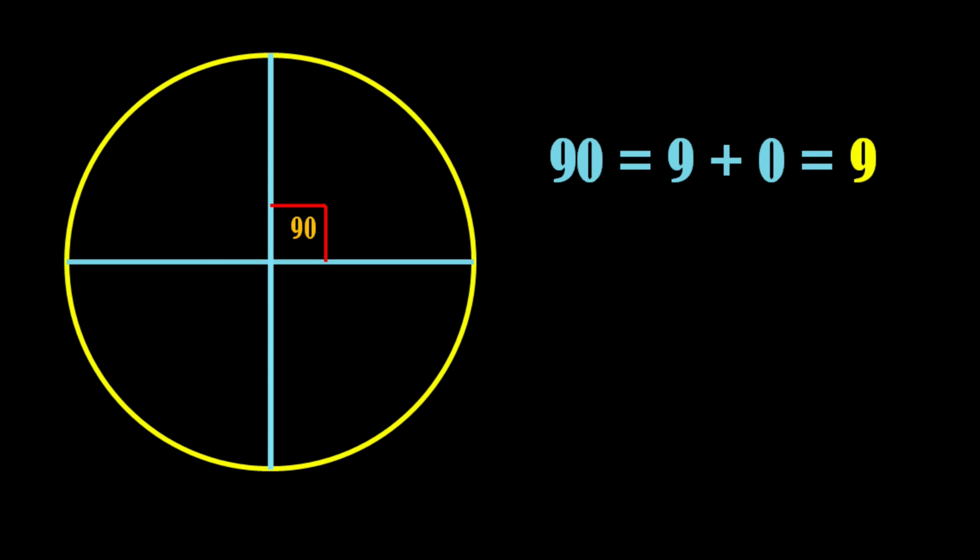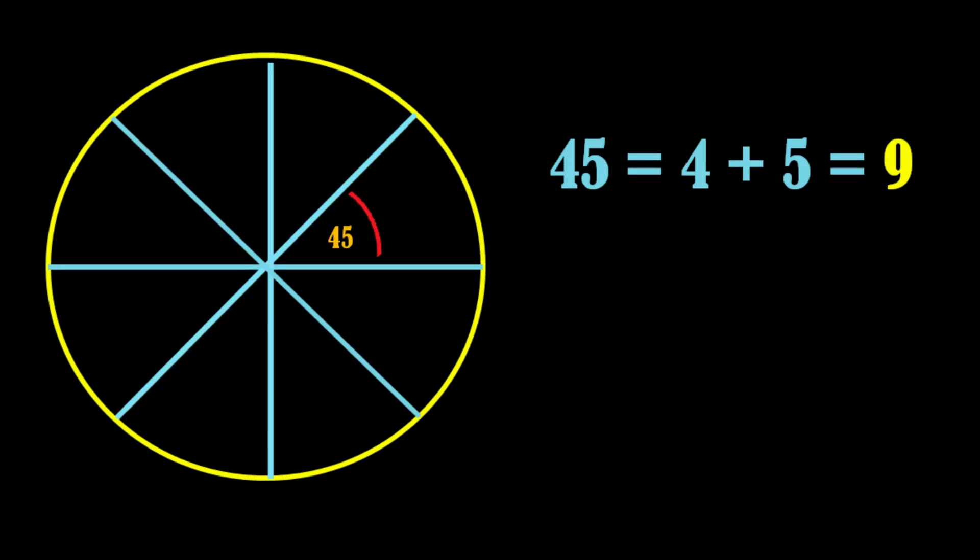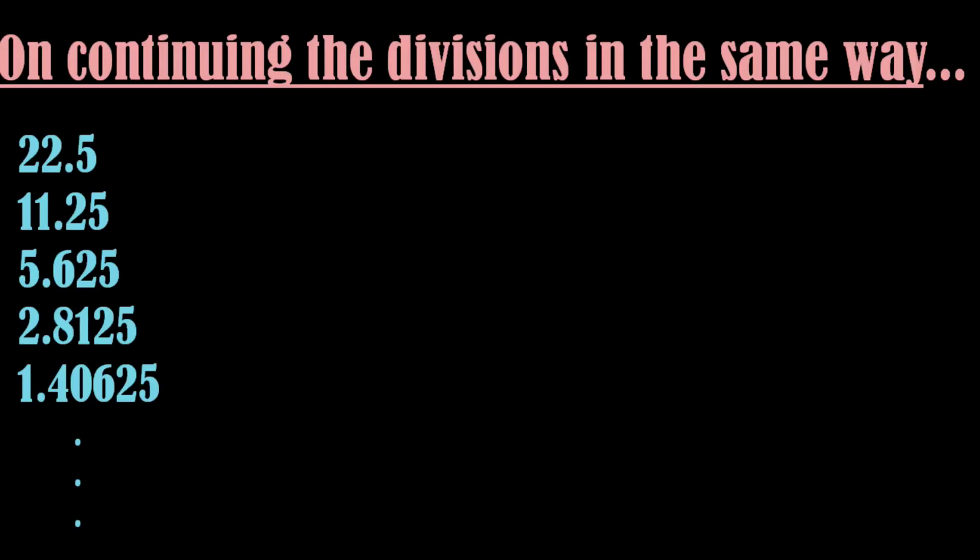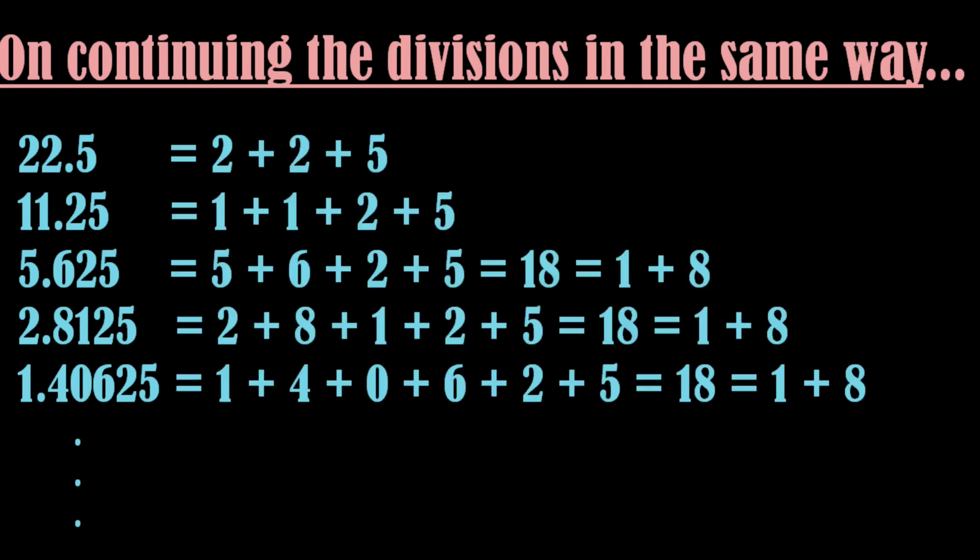Now let's once again divide the semi-circle in half, resulting in a 90 degree angle. If you calculate the digital root of this number, it yields 9 once again. By repeating this process every time, we obtain 9 as the digital root, even when the procedure is repeated an infinite number of times.